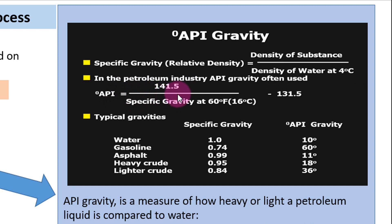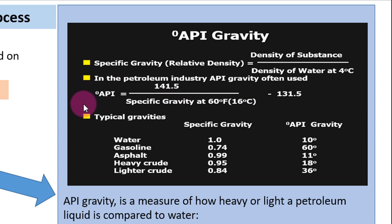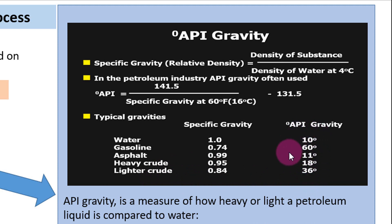In the petroleum industry, we calculate API gravity using: °API = (141.5 / specific gravity at 16°C) − 131.5. Here, specific gravity is calculated at 16°C, unlike the standard 4°C. From this formula: water gives API = 10, gasoline gives about 60, asphalt gives 11, heavy crude gives 18, and lighter crude gives around 36. Gasoline is a petrol-grade, very light material.